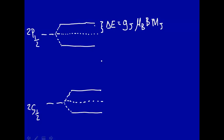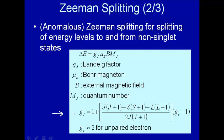For each state we need to determine what g_J is — the Landé g-factor — along with mu_B (the Bohr magneton, a constant), B (the magnetic field, given as 5 tesla), and m_J (the quantum number of the various levels). Recall that m_J equals plus one-half and minus one-half for both states. We have the fairly complicated g_J equation, and we need to know j, s, and l for each state. We'll assume g_e is approximately equal to two for the electron we're exciting.